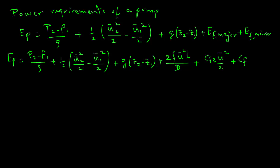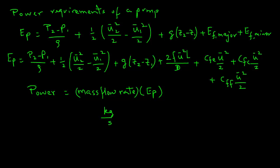To obtain the power requirements of a pump, we use the full expression: EP equals P2 minus P1 over rho, plus one-half times u2 squared minus u1 squared, plus g times z2 minus z1, plus EF-major plus EF-minor. EF-major is 2f u squared L over D, and EF-minor includes CFE times u squared over 2, plus CFC times u squared over 2, plus CFF times u squared over 2. Once EP is known, power equals EP multiplied by the mass flow rate — in kilograms per second — giving joules per second, or watts.